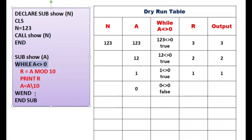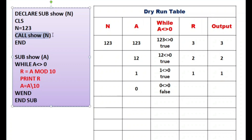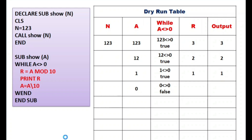Now checking the while condition: 0 not equals to 0 is false, because zero equals zero. The while loop condition is false, so control goes to just after WEND where END SUB is written. The sub procedure is finished and control returns to the main module. The next line is END, so the program completes. Our output is 3, 2, 1. Hope you understand — comment below for any questions, subscribe, like, and share.